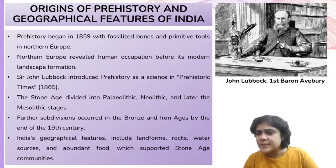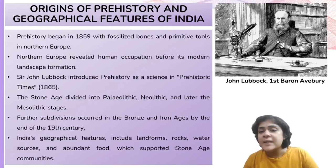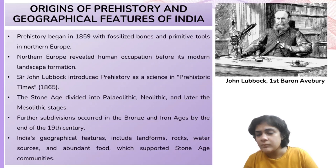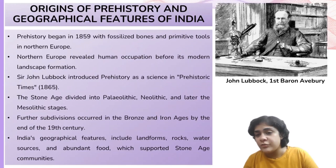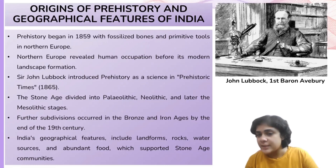This finding, presented before the Royal Society in London, revealed that humans had inhabited northern Europe long before its current geographical features were established, marking the beginning of a significant period preceding recorded human history. John Lubbock, in his 1865 book Prehistoric Times, officially introduced the field of prehistory as a new science, dividing the Stone Age into its current three stages.